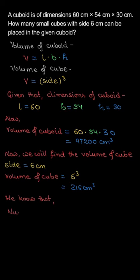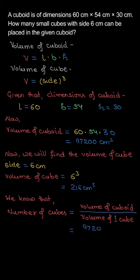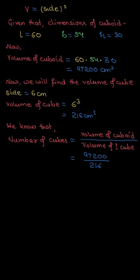So, we know that number of cubes will be equal to volume of cuboid divided by volume of one cube. So, we can write it, 97,200 divided by 216. Canceled, then it will give 450.